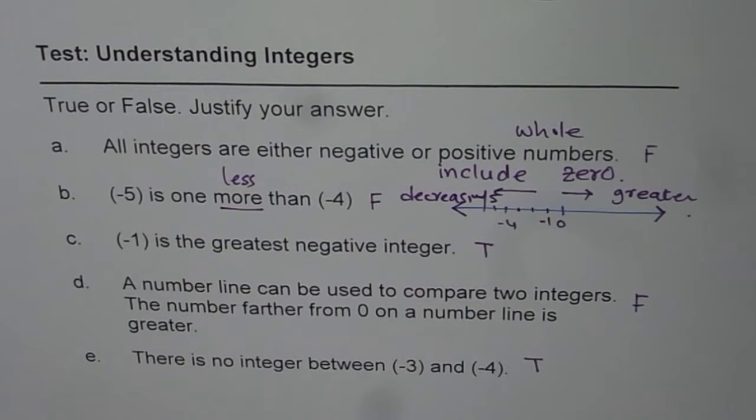I hope these questions help you to understand that integers are negative, positive whole numbers, including 0. And between two integers, like minus 4 and minus 5, we do not have any other integer.